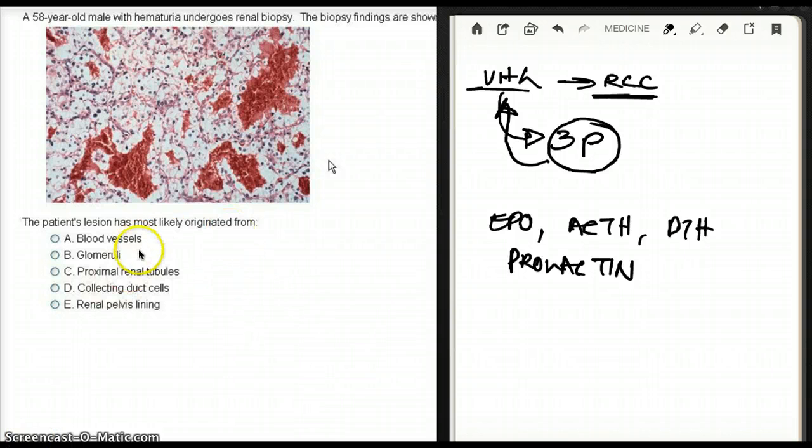In this question, though, they asked where does a renal cell carcinoma originate from? And that is going to be our proximal convoluted tubule.